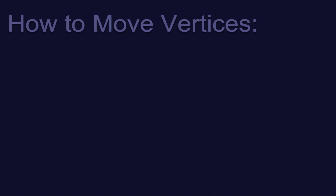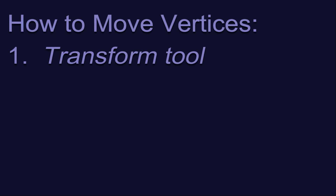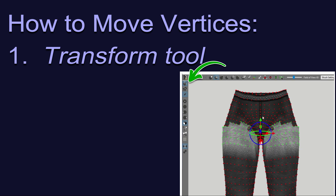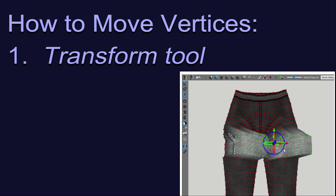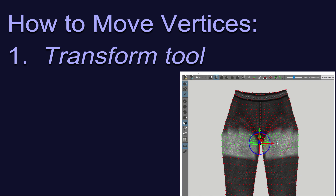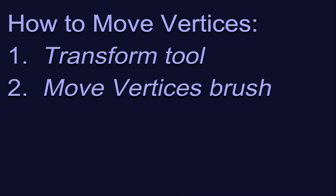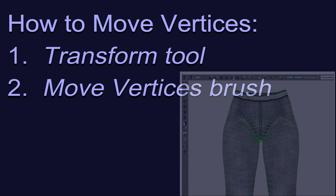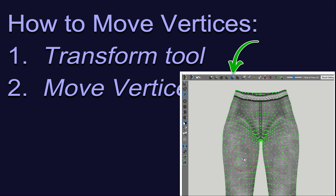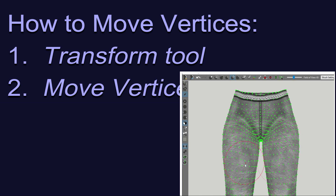The most blunt tool we have for this is the Transform tool. You can select only the vertices you want to move and then click and drag on the little arrows of the Transform tool to move them around. The movement is restricted to only one direction at a time, and there is no fall off. All the vertices that you have selected will move precisely the same distance. The Move Vertices brush is a nice way of moving vertices across areas of your mesh. You can change the brush size and strength, and the brush applies fall off when editing, which means that vertices are affected more or less depending on how close they are to the center of the brush.